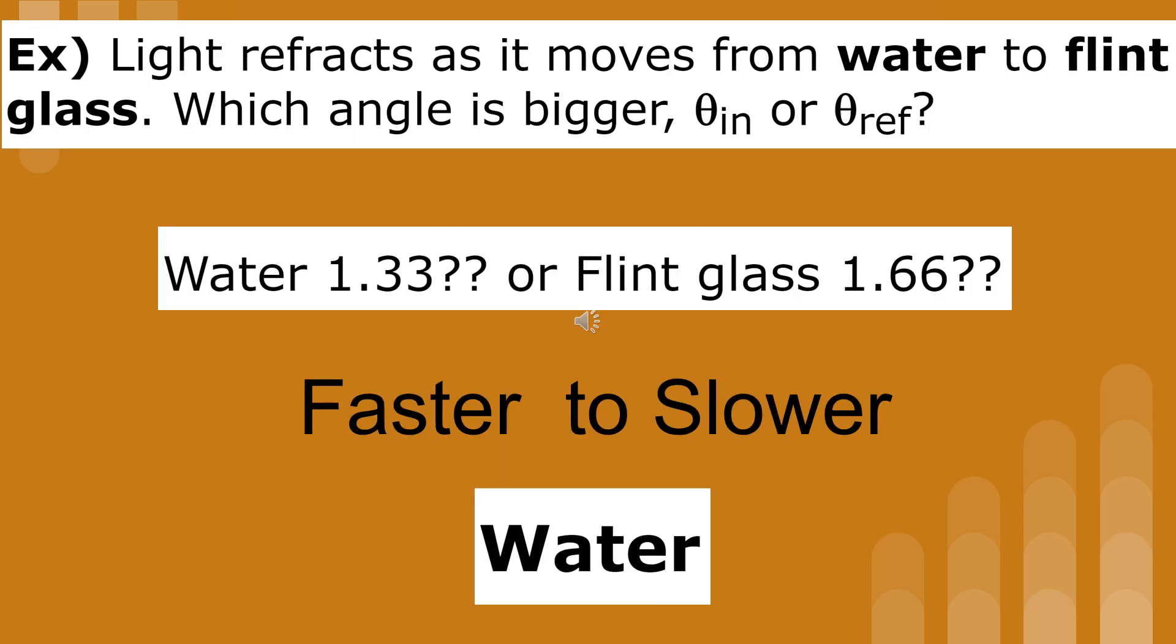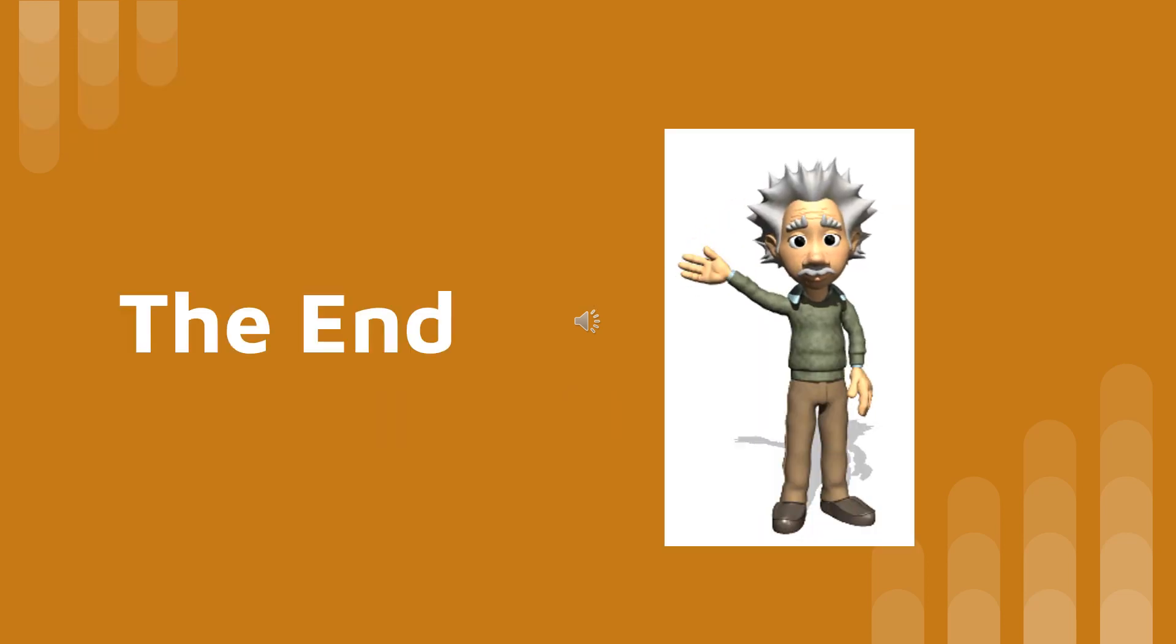Light refracts as it moves from water to flint glass. Which angle is bigger, the angle of incidence or the angle of refraction? Water has an index of refraction of 1.33, and flint glass has an index of refraction of 1.66. Water, with the lower index of refraction, is the faster medium and the first medium. So water being the faster medium, this means that the angle of incidence is greater.